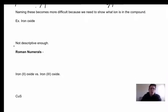The problem is that it becomes more difficult to name these or to write the formulas for these because we don't know what ion is in the compound. So how do we demonstrate which ion is actually doing the bonding?